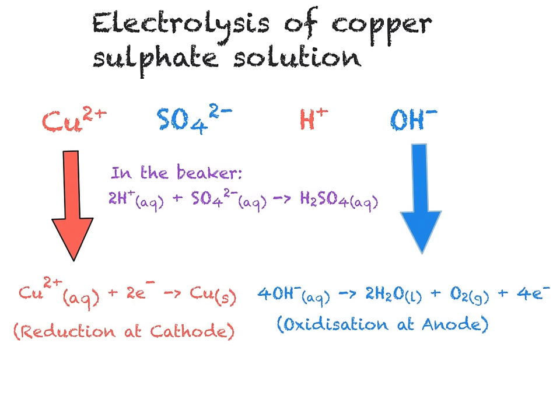This means that we have formed four products: copper, which is solid; oxygen gas; water, which is still in liquid form; and sulfuric acid in aqueous form. As well as copper sulfate, you should also know the products of electrolysis for copper chloride solution, CuCl₂; sodium sulfate solution, Na₂SO₄; and sodium chloride solution, NaCl. Pause the video at this point, working out the two half equations and the products at both the cathode and the anode.